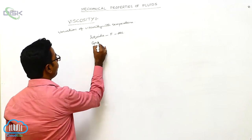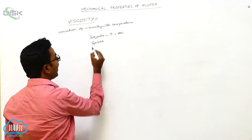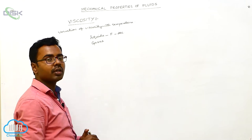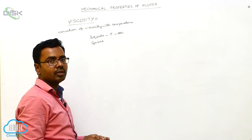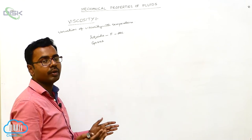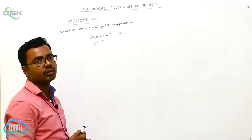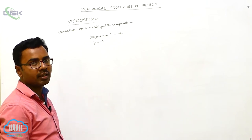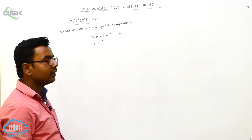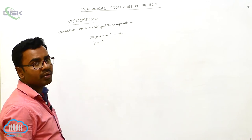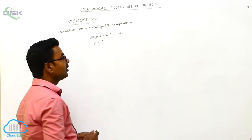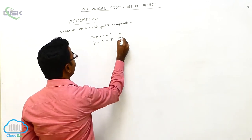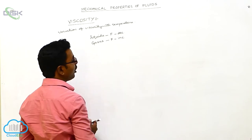In case of gases, as temperature increases, the energy of the molecules also increases, so the exchange of momenta between the molecules of gas will be increased. As exchange of momenta increases, viscosity also increases. So the variation of viscosity with temperature for liquids and gases is opposite.